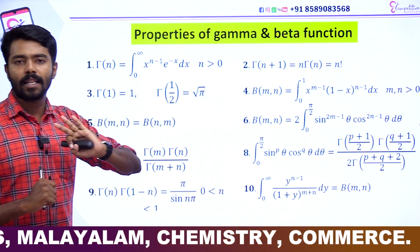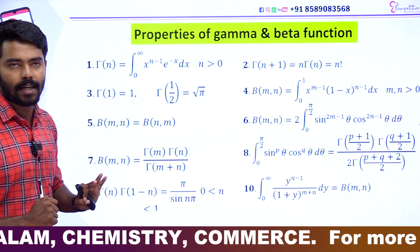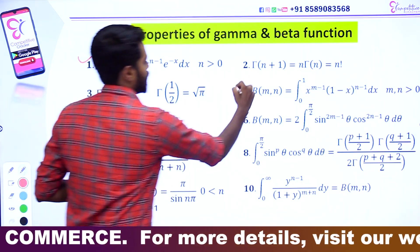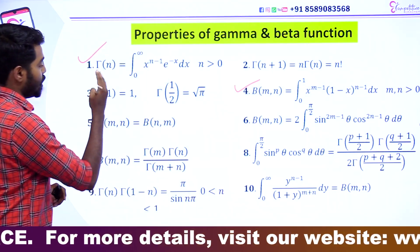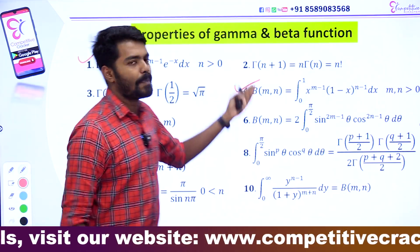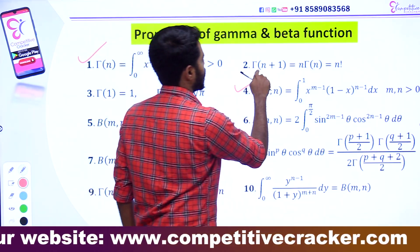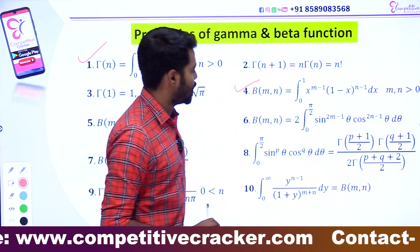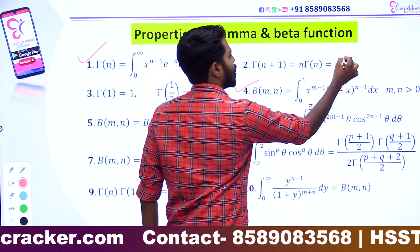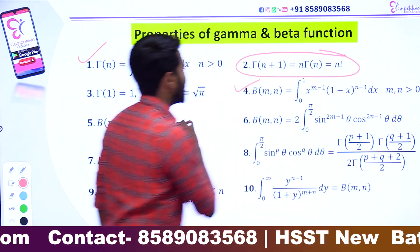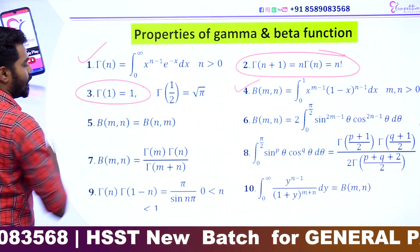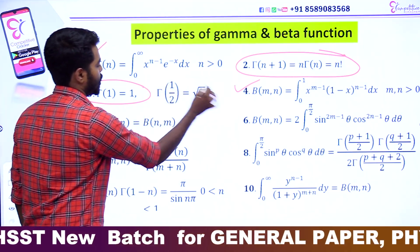All these properties, all equations. First, we have the main equation. This is our main equation. You can see the results in each other. Gamma of n plus 1 is equal to n gamma of n, which is equal to n factorial. If you have the main problem, you can explain the result based on this. Gamma of 1 is equal to 1. Gamma of 1 by 2 is equal to root pi.